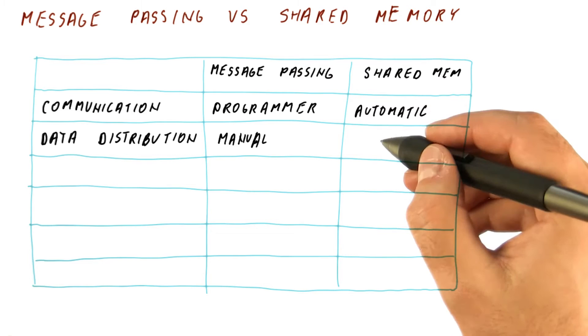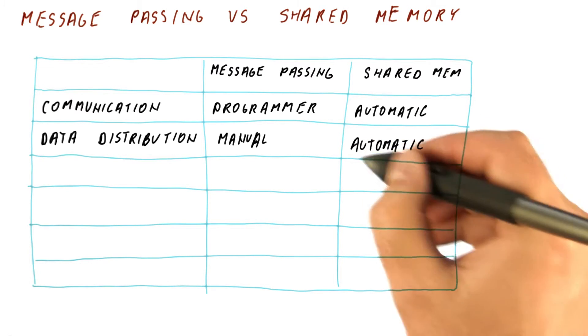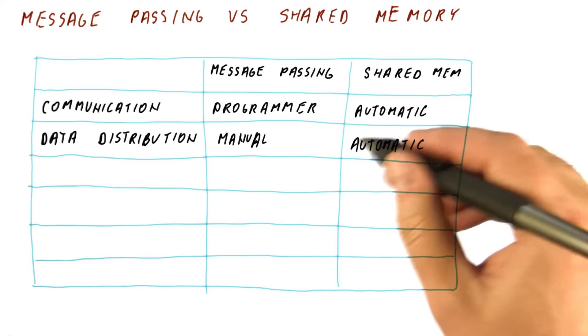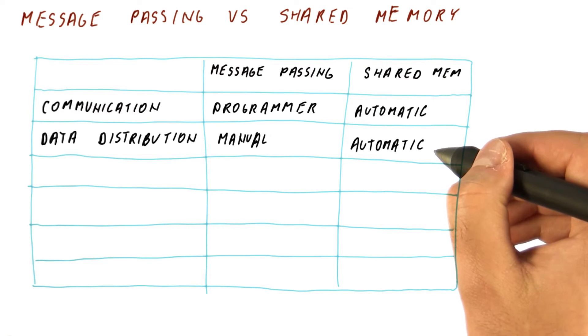In shared memory, the system is responsible for sending the data wherever it's needed. So the programmer simply loads or stores to the data and it is the job of this hardware and the software of the system to figure out which data should be local where at what time.